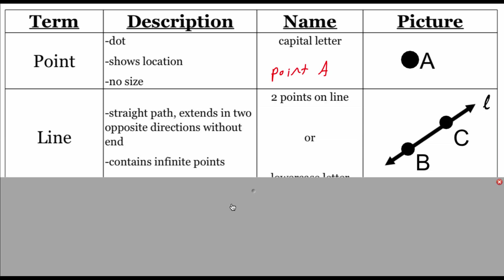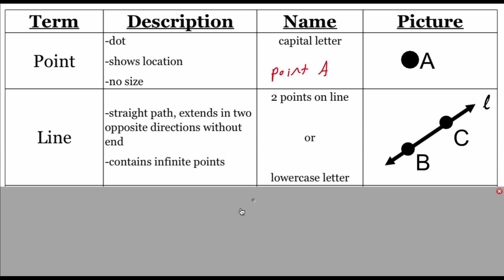Our next structure is a line. Lines are straight paths that extend in two opposite directions without end, and lines are made up of an infinite amount of points. There are two different ways we could name a line: we could use two points that show up on the line, or we could use a lowercase letter. Looking at the picture, there are two points on this line — point B and point C. One name we could give to this line is line BC, shown with a line over the top with two arrowheads on each end. Order is not important when naming a line, so we could also name this line CB.